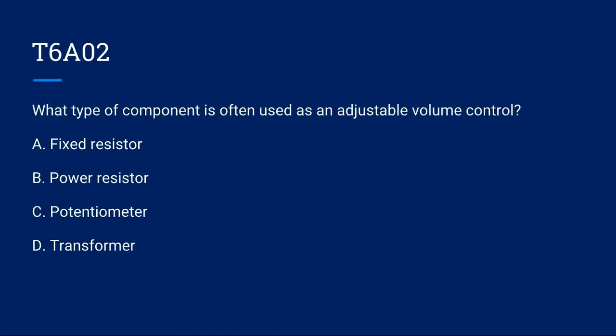T6A02: What type of component is often used as an adjustable volume control? A, fixed resistor. B, power resistor. C, potentiometer. Or D, transformer? The correct answer is C, potentiometer.